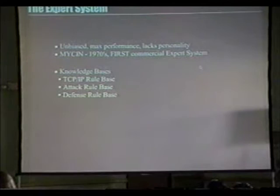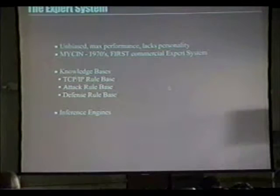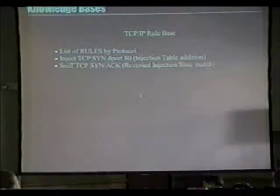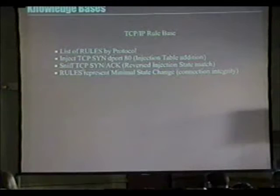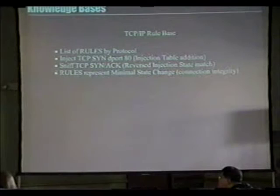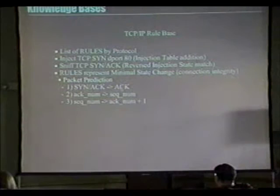Knowledge bases: we have a TCP/IP rule base, an attack rule base, and a defense rule base. The TCP/IP rule base is the most important — it is a dictionary of protocols by major and minor version with the respective dependent fields that need to be altered to maintain next packet injection. Inference engines match up to these knowledge bases and tell how to sort the knowledge bases in as little time as possible. Our TCP/IP rule base consists of rules by protocol: inject TCP SYN across destination port 80, make an injection table addition, sniff the next incoming TCP SYN-ACK packet, reverse the injection state match — invert source with destination IP and ports — verify that was already injected by the user, and add that to the interstate table.